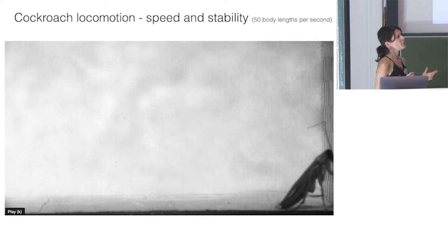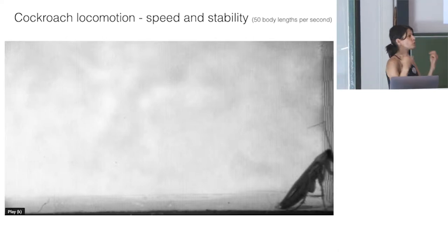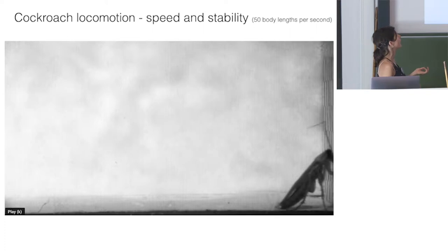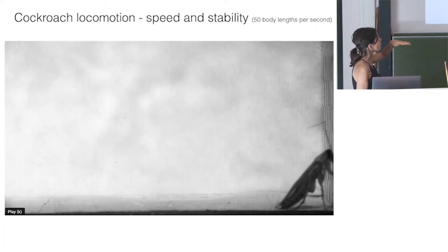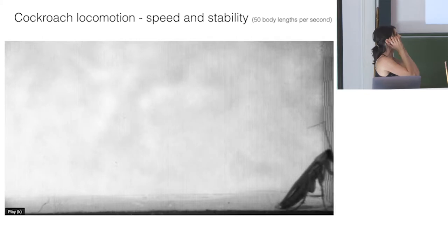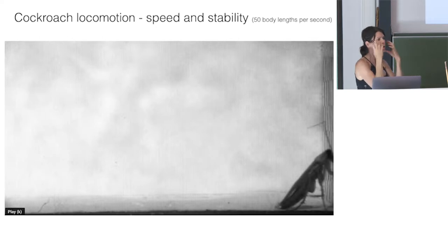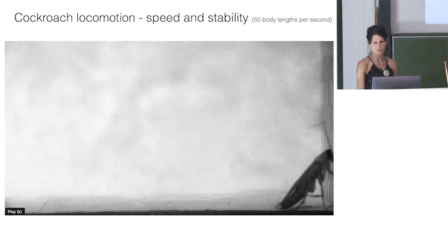Cockroaches run very fast — they cover 50 times their body length in a second, comparable for a human to running at 330 kilometers per hour. In this video we see a cockroach raise itself from horizontal to vertical movement within 75 milliseconds, using its head as a bumper to convert the force of collision and raise its body upward.